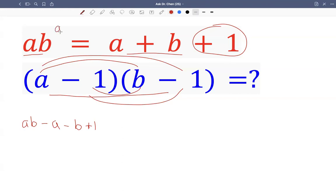So I can rewrite this as AB minus - I minus A on both sides, I minus B on both sides, then equals one.